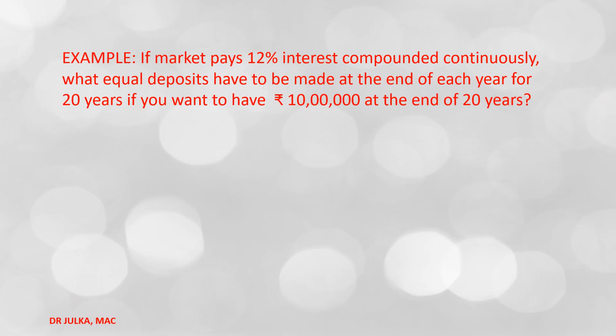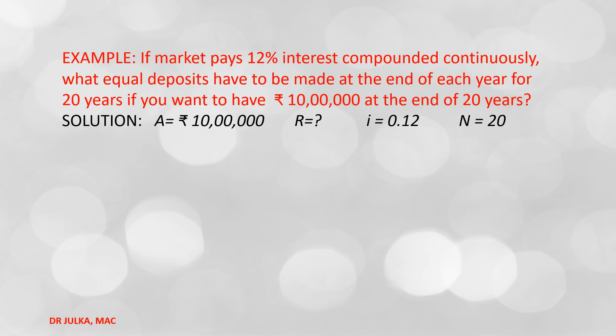Next example: if a market pays 12% interest compounded continuously, what equal deposits have to be made at the end of each year for 20 years if you want to have Rs. 10,00,000 at the end of 20 years? In this example, future value A = Rs. 10,00,000, interest rate r = 0.12, n = 20, and we want to calculate the amount of annuity R.